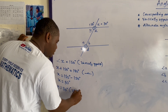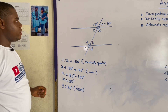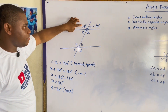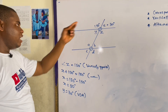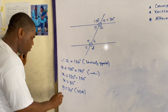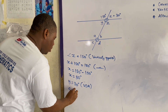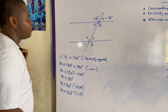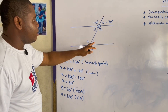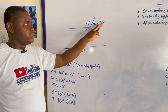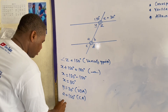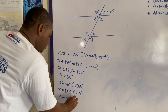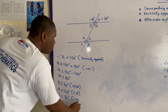We can also find A: A equals 150 degrees because corresponding angles are equal. You can also find B because B corresponds to 30 degrees, so B equals 30 degrees — corresponding angles.